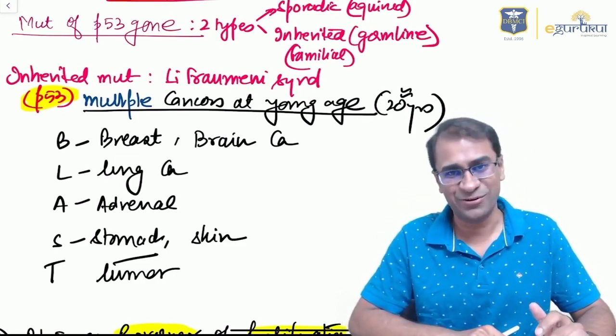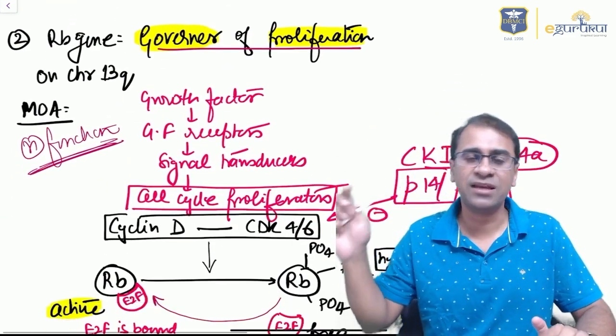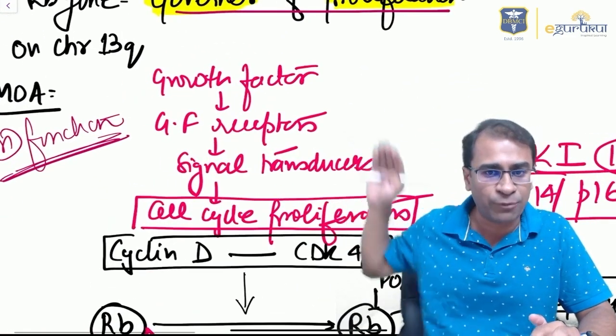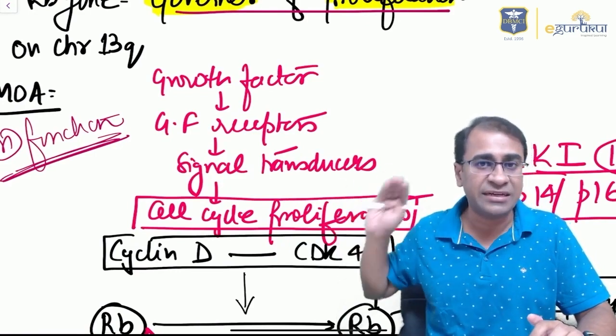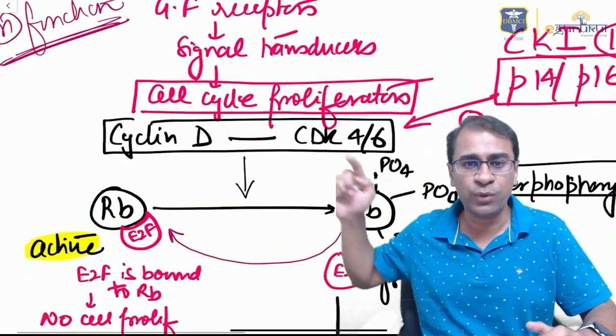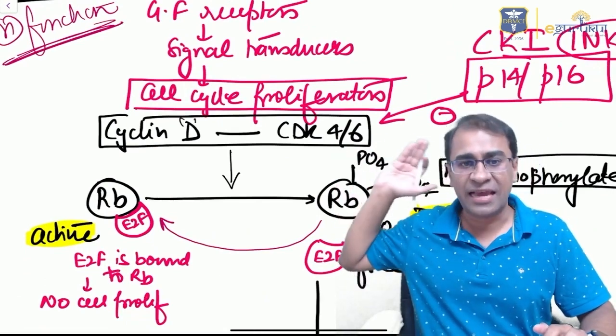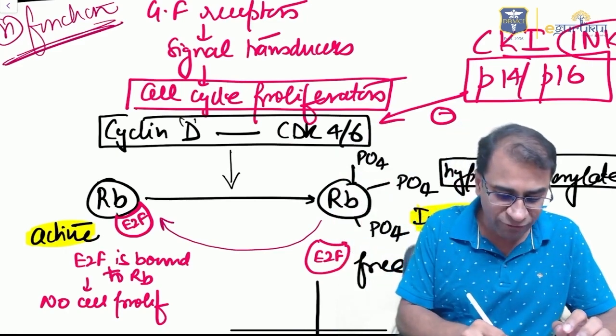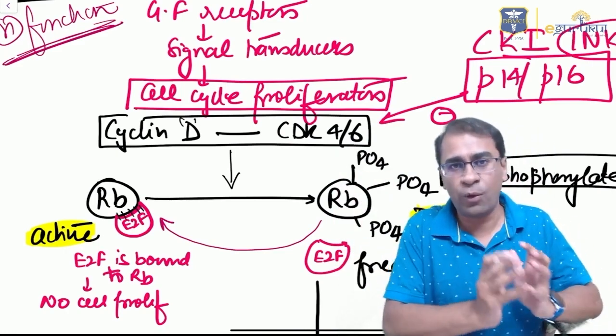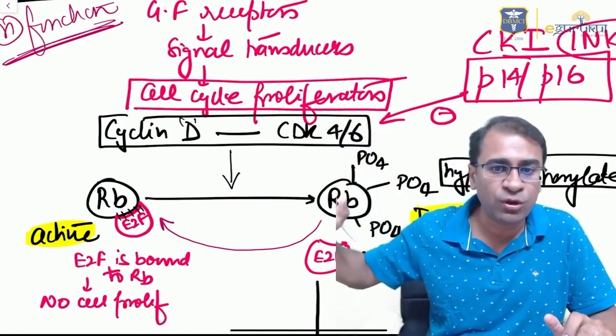Next comes the RB gene, called the governor of proliferation. Whenever there's a growth signal for proliferation, what activates are cell cycle proliferators—cyclins D, E, A, and B. The first one to activate is cyclin D, which comes with CDK4 and 6. Cyclin D acts on the RB gene, on which E2F is attached. E2F is elongation factor 2. The moment cyclin D acts on it, E2F becomes free.